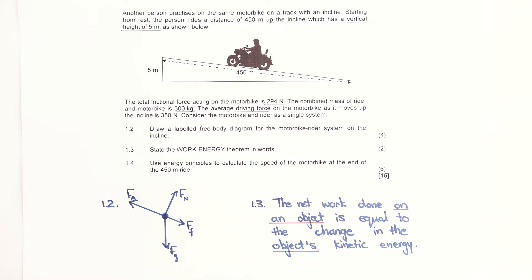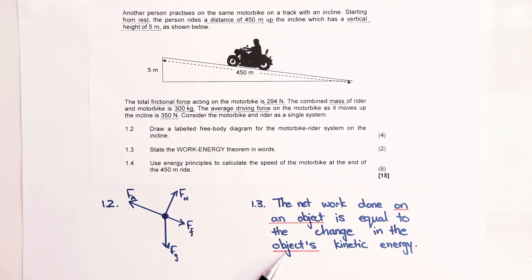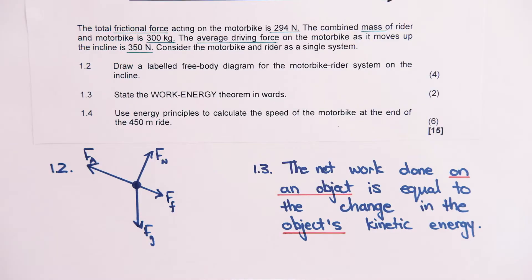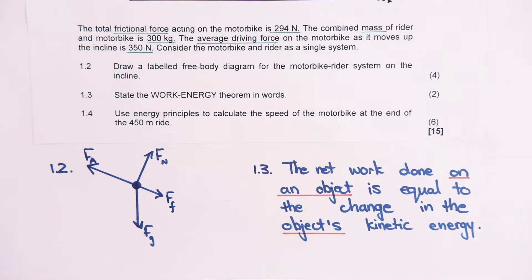Question 1.3: state the work-energy theorem in words. It is very important that you know this law because they will ask it at some stage. The net work done on an object is equal to the change in the object's kinetic energy. State it just like that. There is an alternative way of stating it slightly differently in the exam guidelines, but always remember: net work done on an object equals the change in the object's kinetic energy.